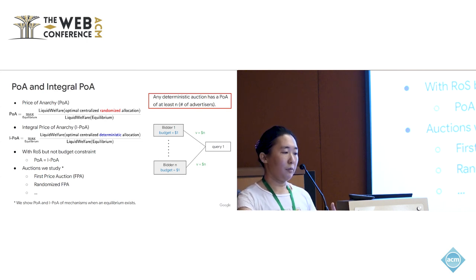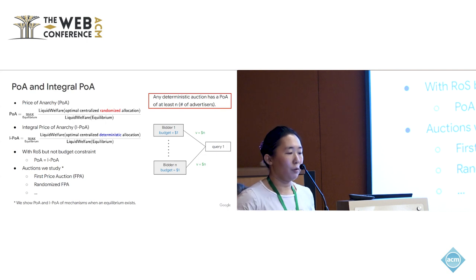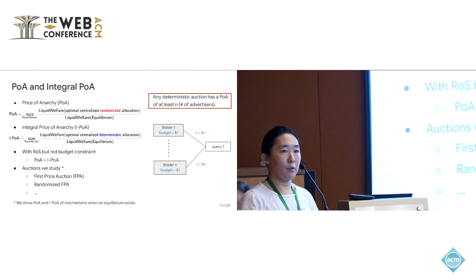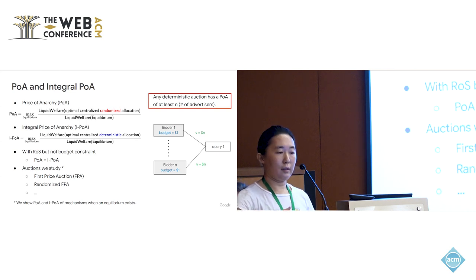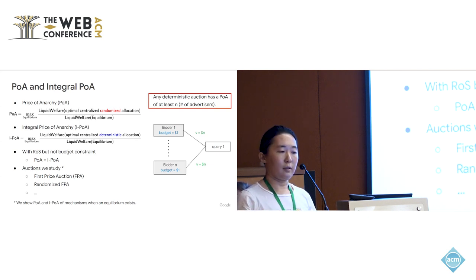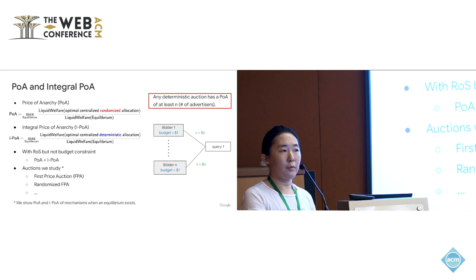When there's no budget constraint, POA equals IPOA. We study several auctions including first price auction, randomized first price auction, and others. Note that POA and IPOA results here apply when an equilibrium exists — proving existence is interesting future work. We can generalize to n bidders each with value n for a query but budget of only one, showing a gap between optimal deterministic and randomized allocations. As a result, any deterministic auction has a POA of at least n, where n is the number of advertisers.